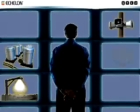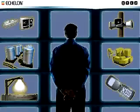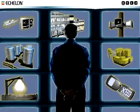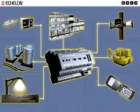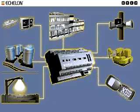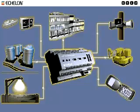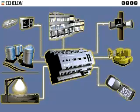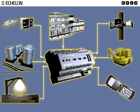Bring all systems into view. Echelon's iLon 100 internet server brings your products or systems to you wherever you are, no matter what you need to connect with — powerful LonWorks control networks, legacy equipment over M-Bus or Modbus, energy submeters, and more — over a LAN or over a wireless connection.